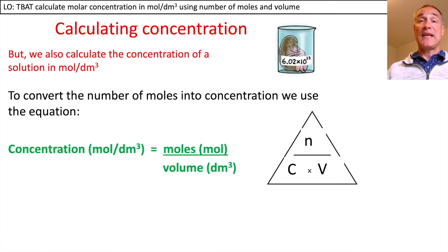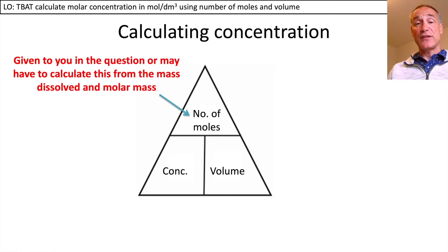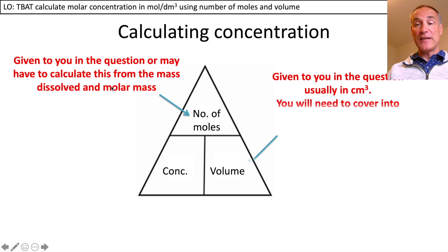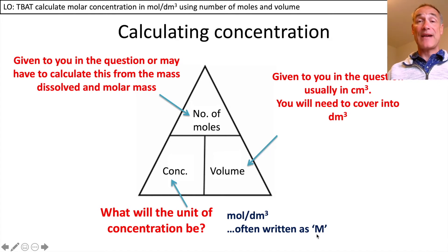We also measure concentration in moles per decimetre cubed. To convert the number of moles into concentration we use the equation: moles divided by the volume in decimetre cubed. In exam questions you're normally given the number of moles, or you'd have to calculate it from the mass dissolved and the molar mass. The unit moles per decimetre cubed is often written as capital M to stand for molar concentration.